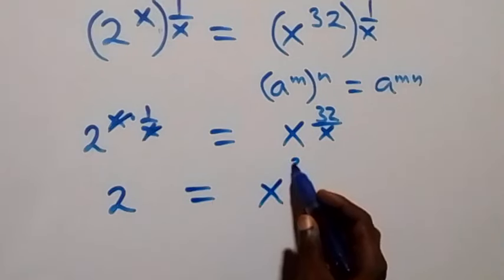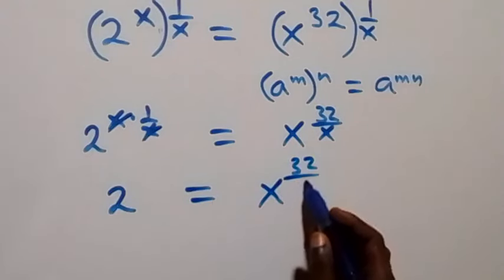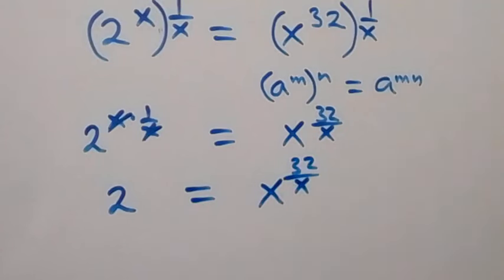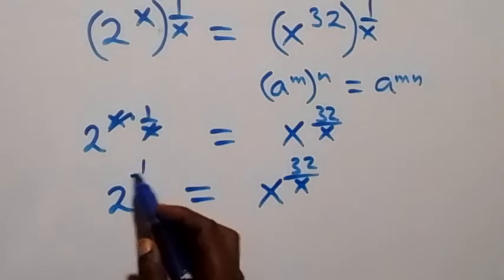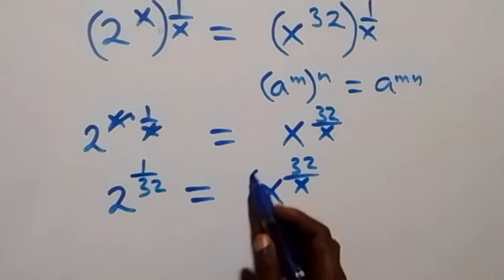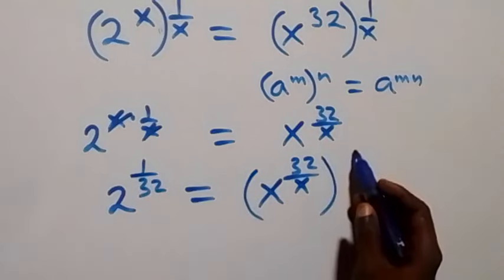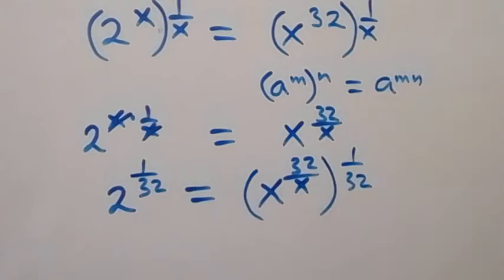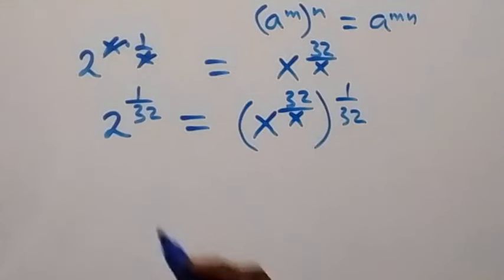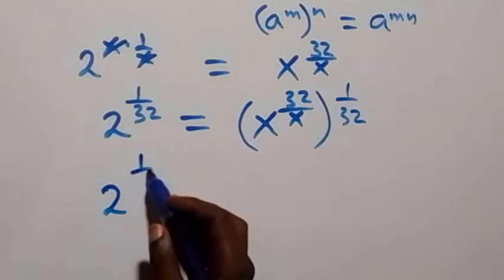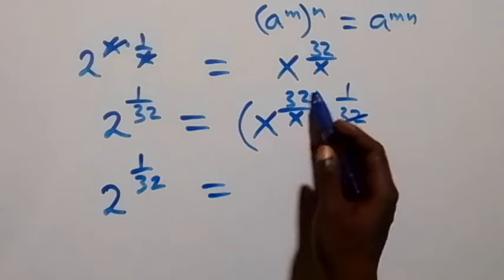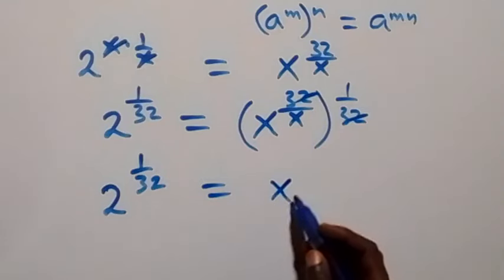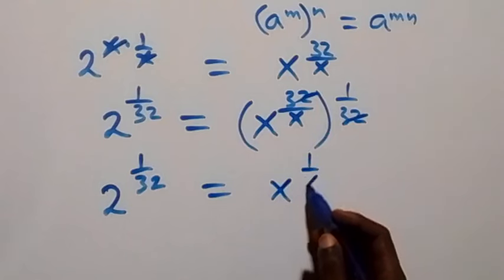From here, the next step is to raise both sides to power 1 over 32. Raising this side to 1 over 32 and also the other side to 1 over 32 gives us 2 raised to power 1 over 32 equals x raised to power 32 over x times 1 over 32. The 32s cancel each other, leaving x raised to power 1 over x.